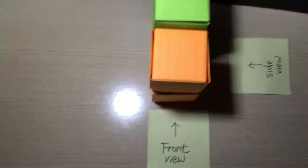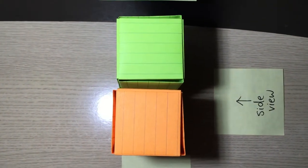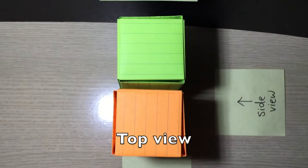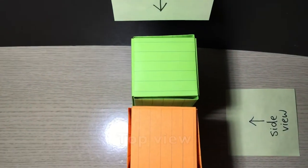So what about the top view? The top view will be this angle. Again we have only two squares.